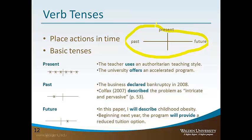Let's start off by talking about the present tense. The present tense describes things that always happen or usually happen. They describe general truths, observations, or facts. For example, the teacher uses an authoritarian teaching style — he used it yesterday, he's using it today, he'll use it tomorrow. This is just a basic observation.